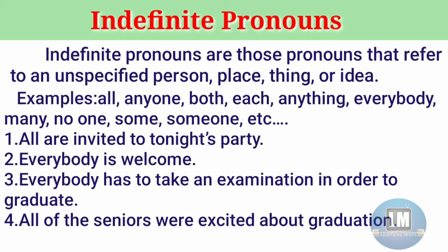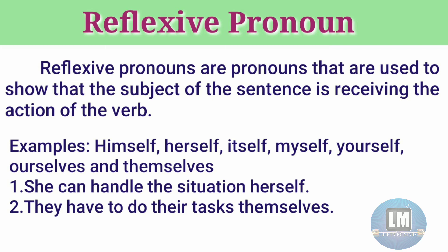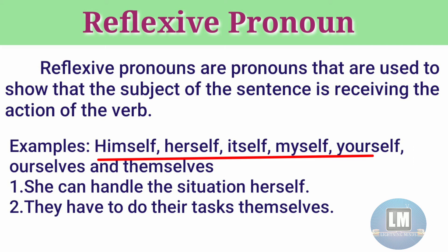Unspecified person, place, thing, and idea are all covered by indefinite pronouns. Next, reflexive pronouns are pronouns used to show that the subject of the sentence is receiving the action of the verb. Examples: yourself, herself, myself, ourselves, themselves. Example sentence: 'She can handle the situation herself' — here 'herself' is a reflexive pronoun, meaning she herself can handle the situation. Second: 'They have to do their tasks themselves' — here 'themselves' is a reflexive pronoun. The action returns back to the subject — this is called a reflexive pronoun.